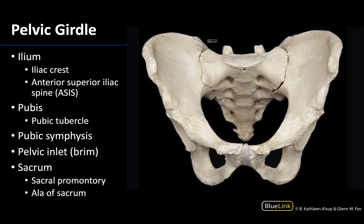We have a lot of great things to see in this anterior view of the pelvic girdle. When I say pelvic girdle, I mean the two coxal bones or hip bones and the immovable portion of the vertebral column, the sacrum — and you can see a bit of the coccyx down here.